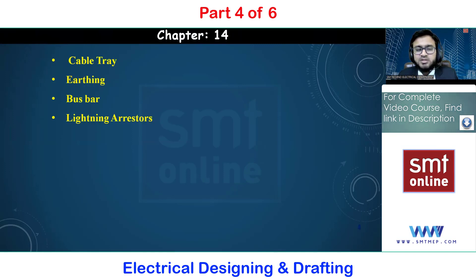In this chapter, we're going to understand four basic concepts: cable trays, earthing, bus bar, and lightning system. The calculation of cable tray is very simple, but installation and execution are very complex because we have to coordinate with other services. Next, earthing is a very important area in electrical designing.